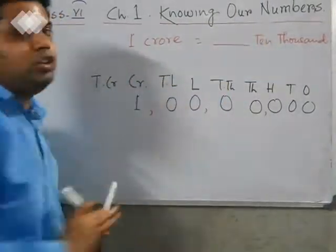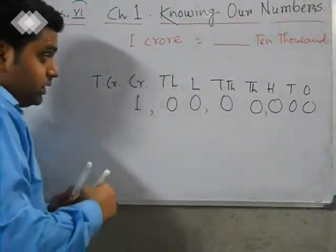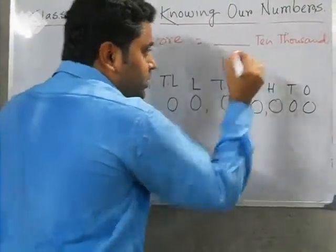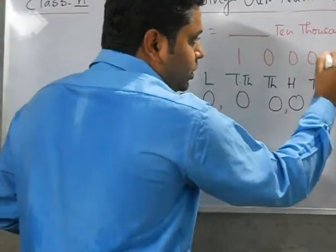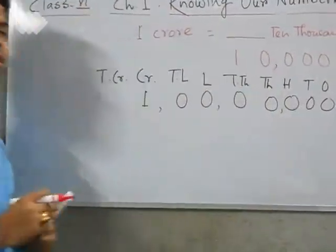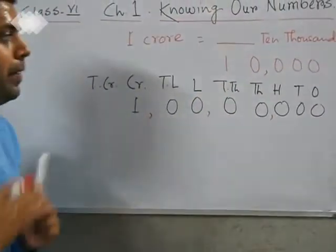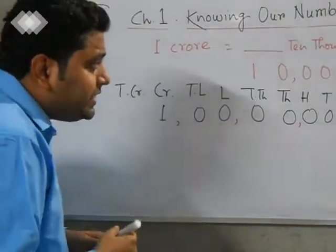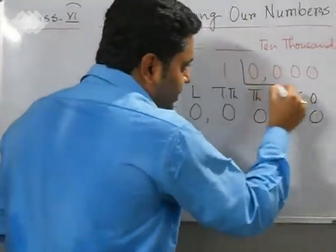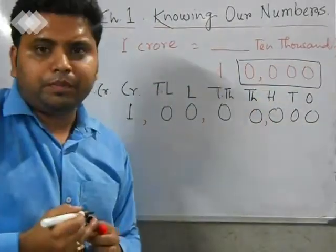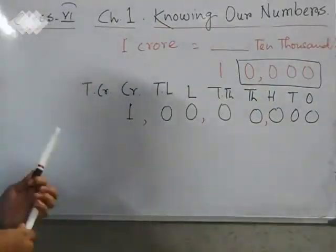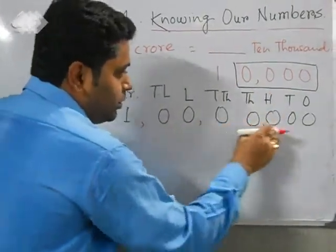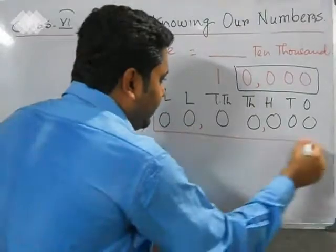Now let's place ten thousand in the table. Ten thousand has a 1 in the ten-thousand place and zeros in the rest, giving us 10,000. One crore has seven zeros, and ten thousand has four zeros.